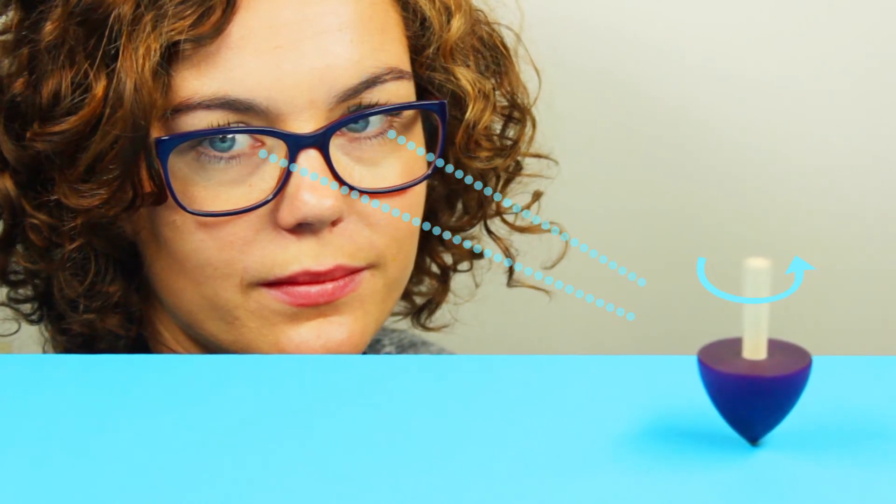Imagine a quantum particle in superposition rotating both counterclockwise and clockwise, and then you peek at it to see which way it's spinning. It will immediately pick one direction. Superpositions are so fragile that just so much as looking at them will break them. That gets in the way if you want to build a quantum computer.